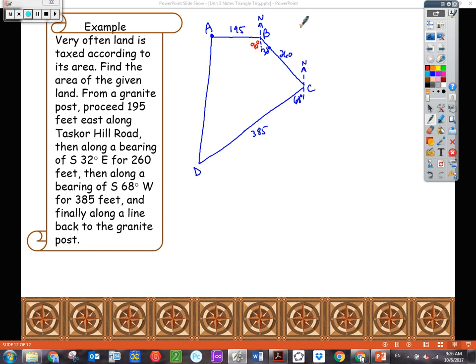Now I need to look at the two parallel lines cut by a transversal thing. We have our north lines, two parallel lines cut by a transversal. So I know that if this is 32 degrees, we know opposite interior angles are equal, so this is going to be 32 degrees. Since I know this is 32 and this is 68, I actually could find that angle measure too. So if we do 68 plus 32 minus 180, that angle measure is 80.